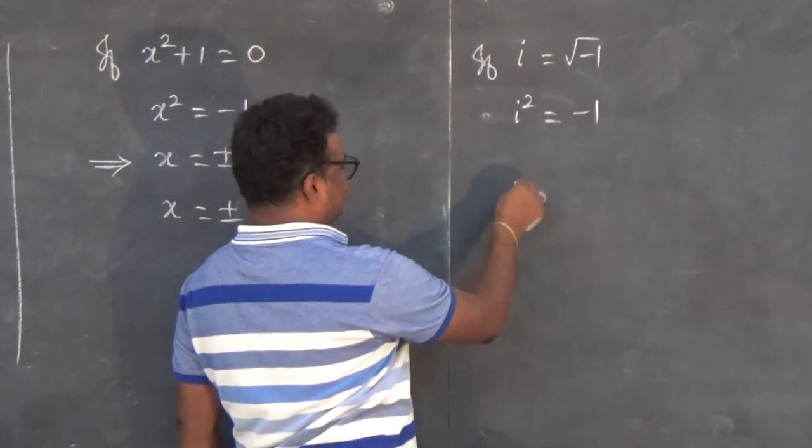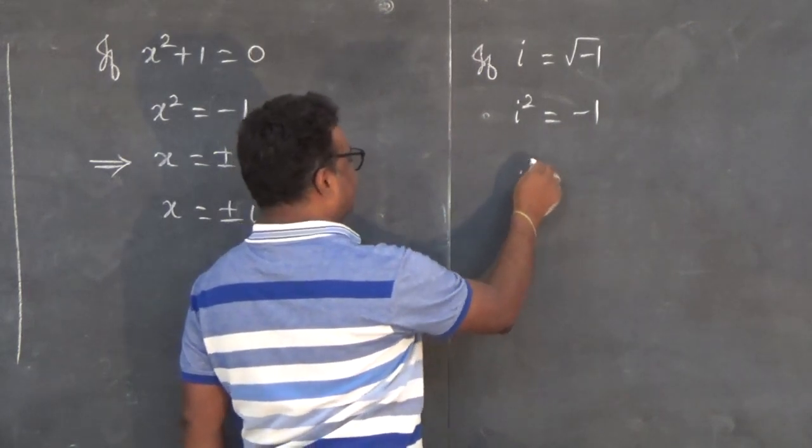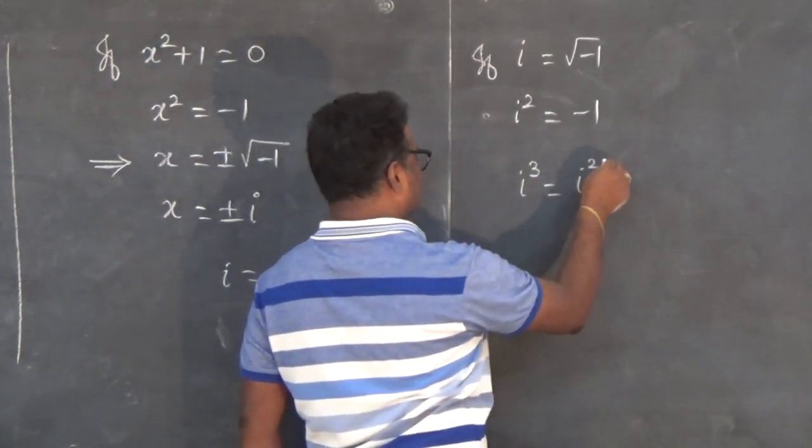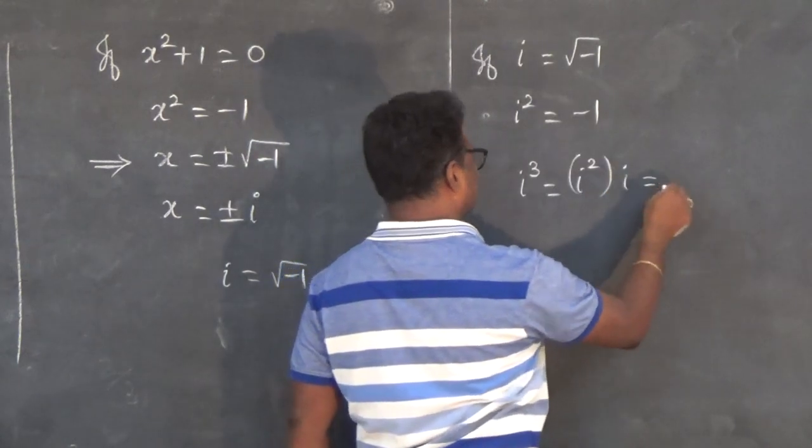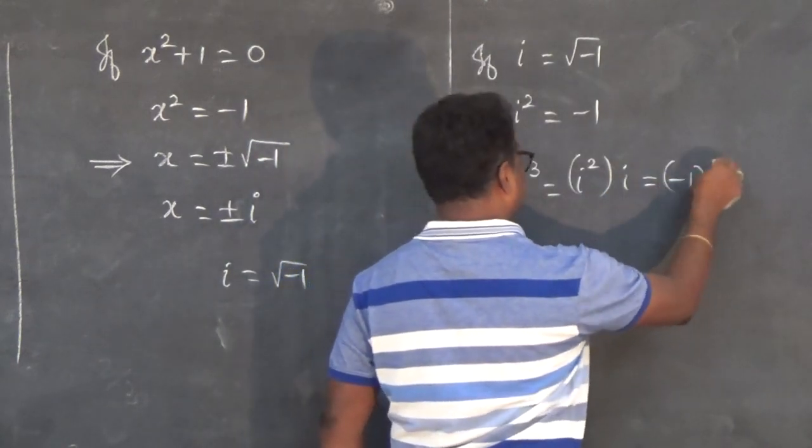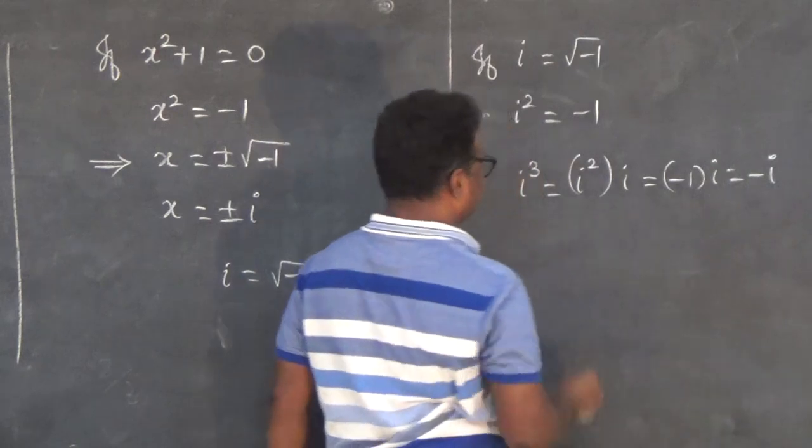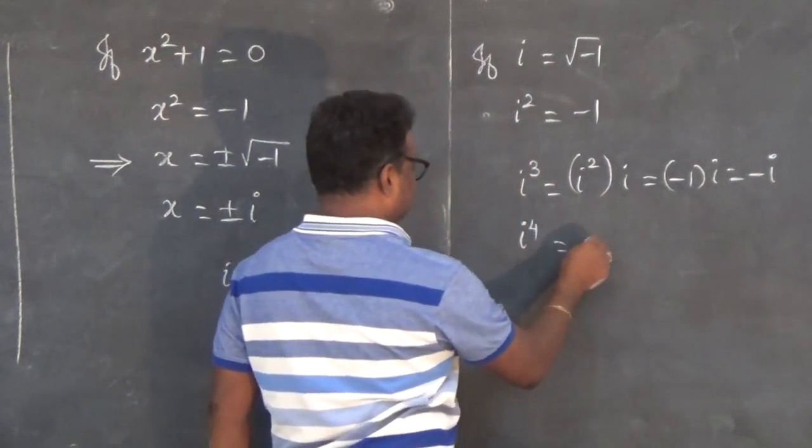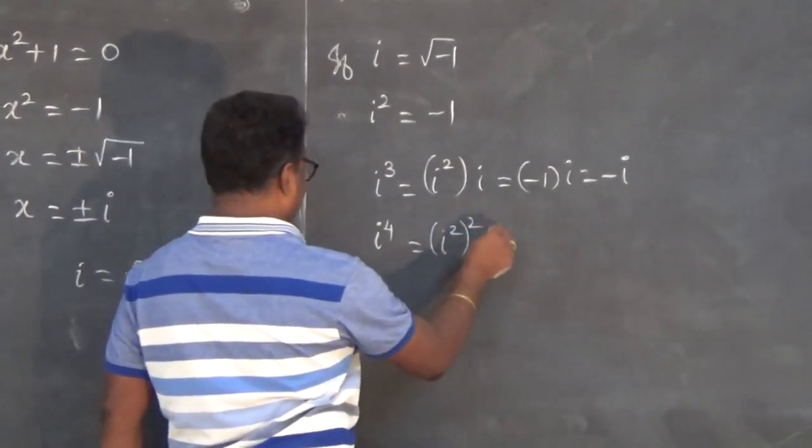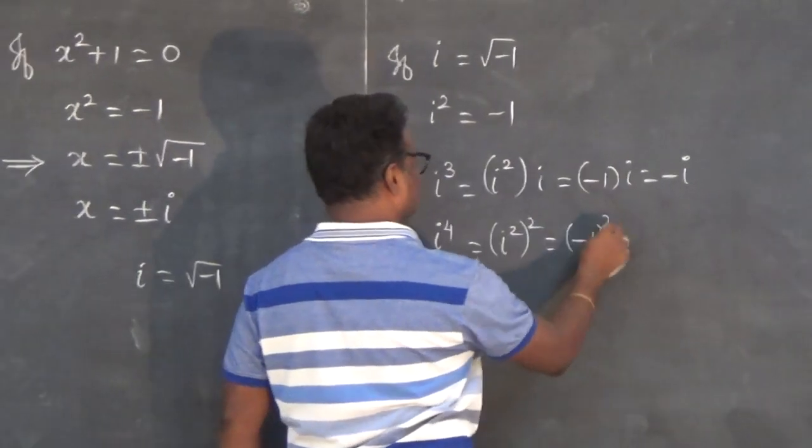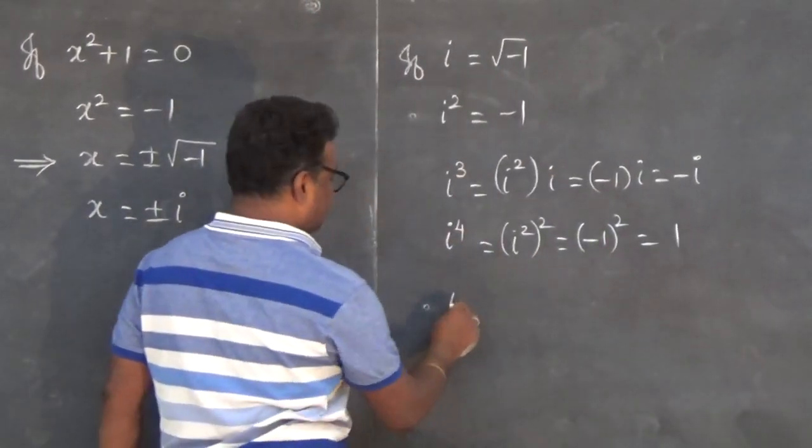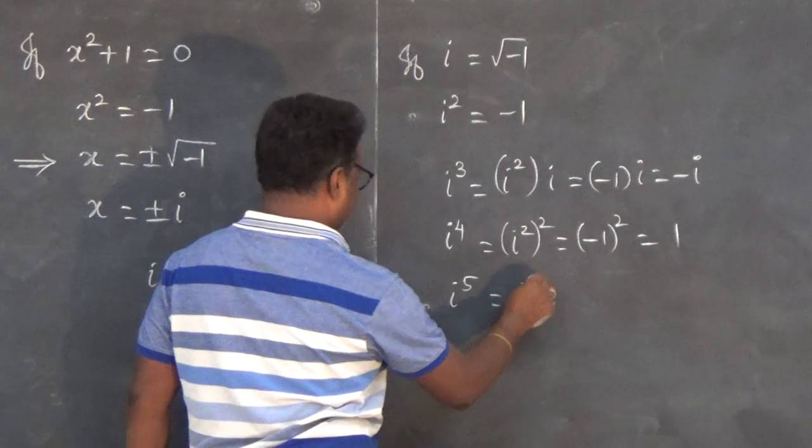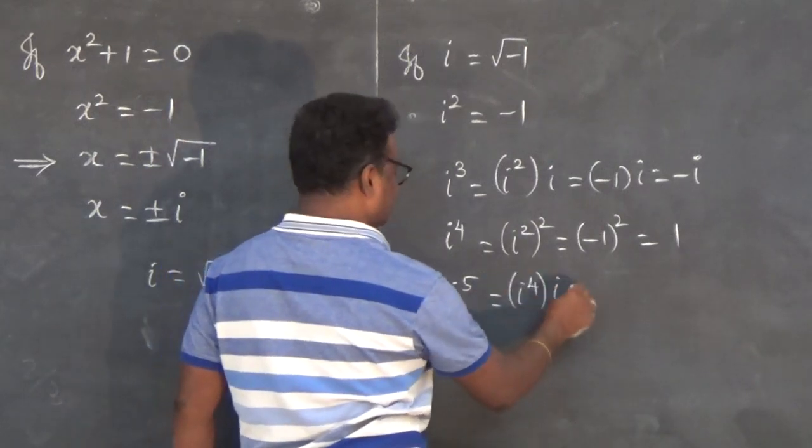We can develop this further. i³ = i² × i = -1 × i = -i. i⁴ = (i²)² = (-1)² = 1. i⁵ = i⁴ × i = 1 × i = i.